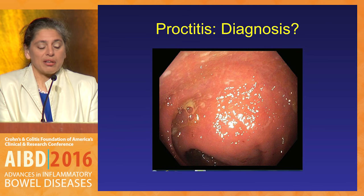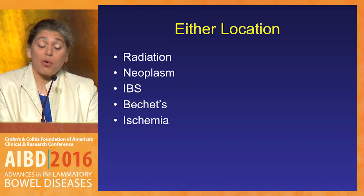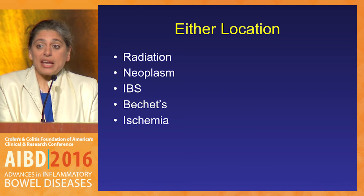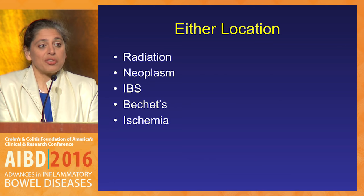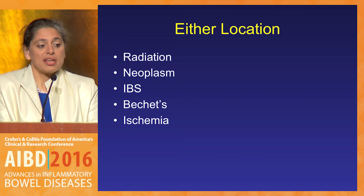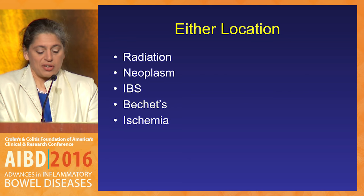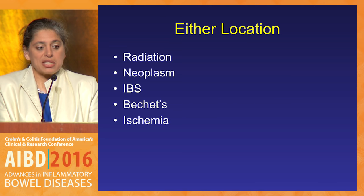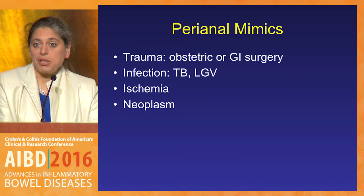What can happen in either location — small bowel or the colon — is radiation change, which can happen decades after the original insult. Going back to making sure you have a clinical history on that patient. Neoplasm can happen in either one. Irritable bowel syndrome is much more prevalent. Also Behcet's, and ischemia as I showed you earlier.